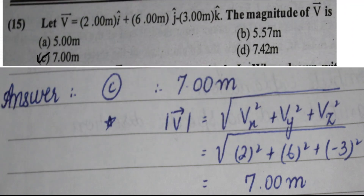Next question: let v equal 2i + 6j − 3k meters. The magnitude of v is found using |v| equals √(vx² + vy² + vz²), where vx equals 2, vy equals 6, and vz equals −3. Substituting all values gives a final answer of 7 meters, option C.